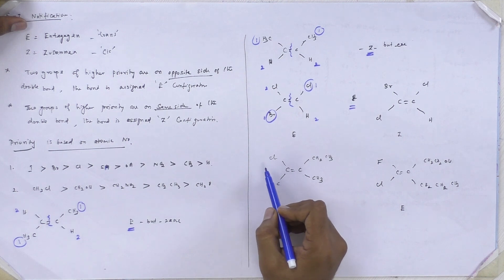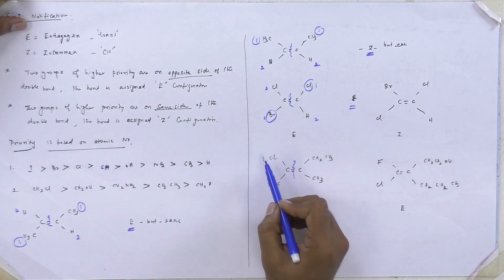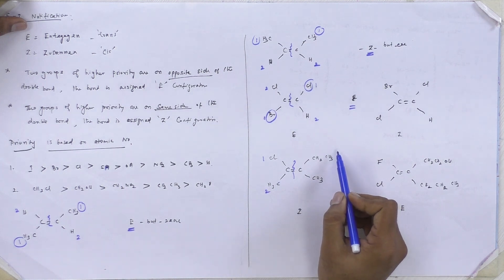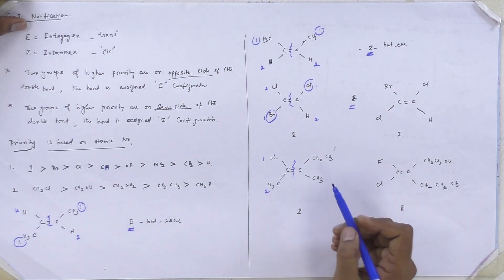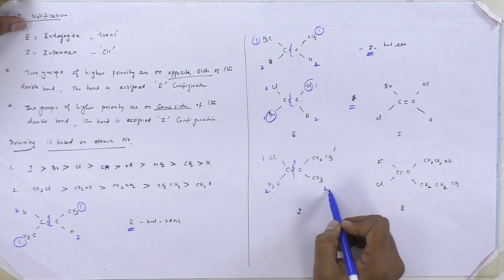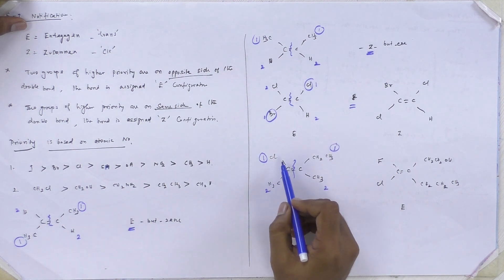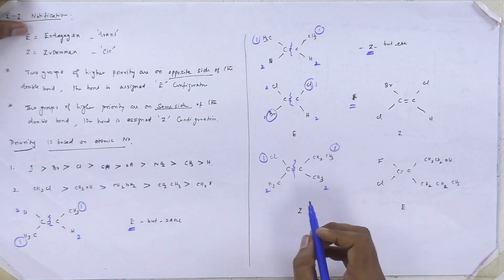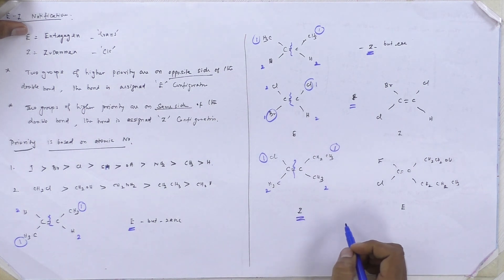Here we split into two parts. Chlorine is highest priority, then methyl. The highest priority group on the other side — ethyl is lowest priority. So the highest priorities are on the same side, therefore it's called Z configuration.